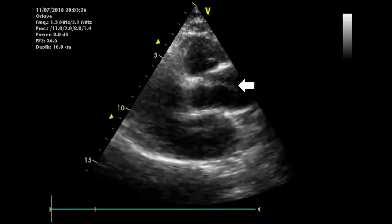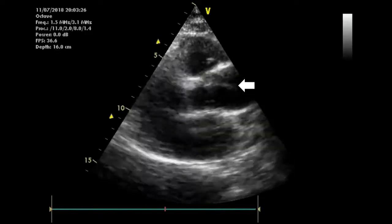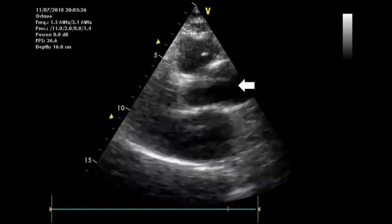This is what an intimal flap looks like on 2D ECHO, and sometimes placing color Doppler can help you distinguish the true aortic lumen, in which you can see color flow, from the false lumen, in which you don't see any color flow.